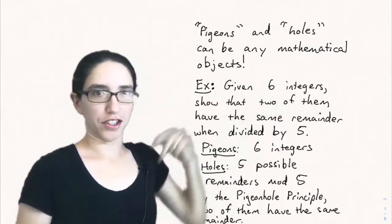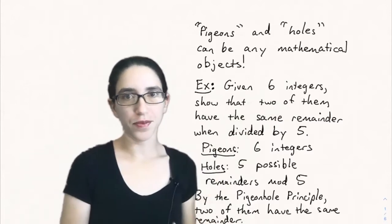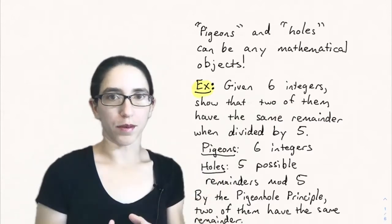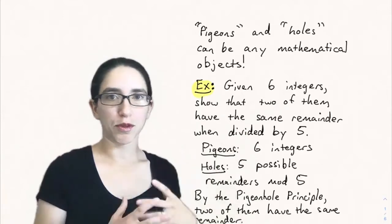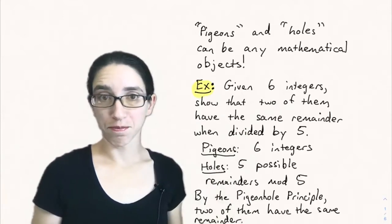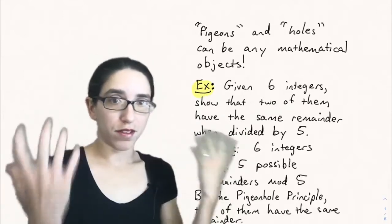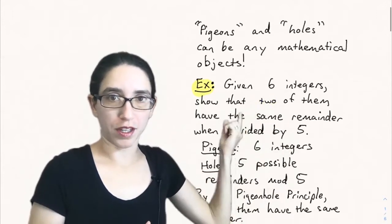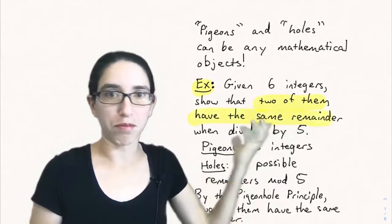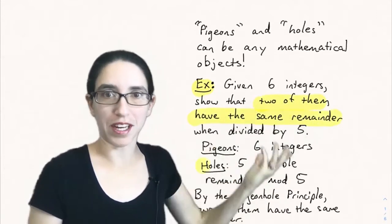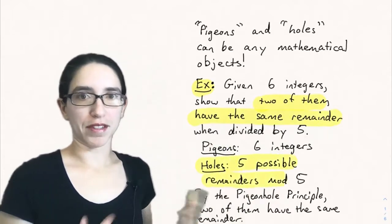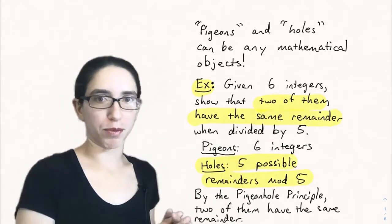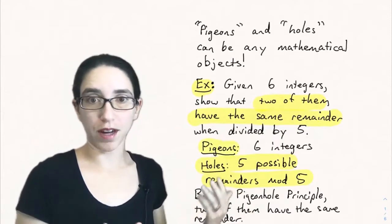Given six integers, we want to show that some two of them have the same remainder when divided by five. This looks like a pigeonhole problem because we're showing that two things — two pigeons, or in this case integers — have the same remainder. The holes here are going to be the five possible remainders that you can get when you take mod five.